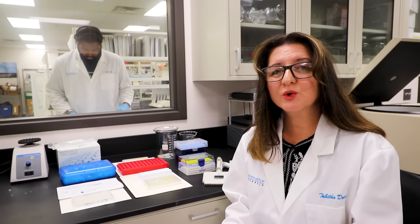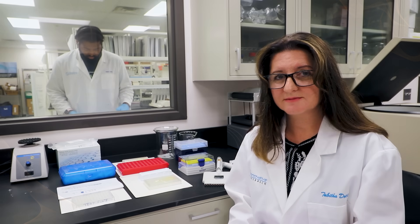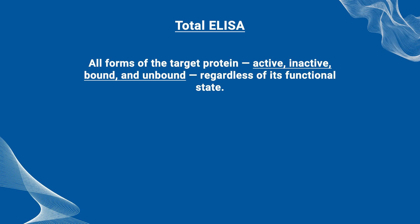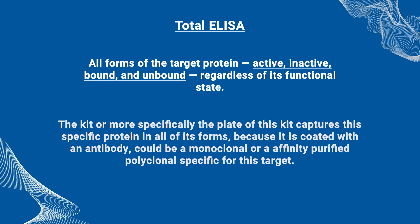A total ELISA kit measures all forms of the target protein — such as active, inactive, bound, and unbound — regardless of its functional state. The plate captures the specific protein in all of its forms because it is coated with an antibody, which could be a monoclonal or affinity purified polyclonal, specific for its target.